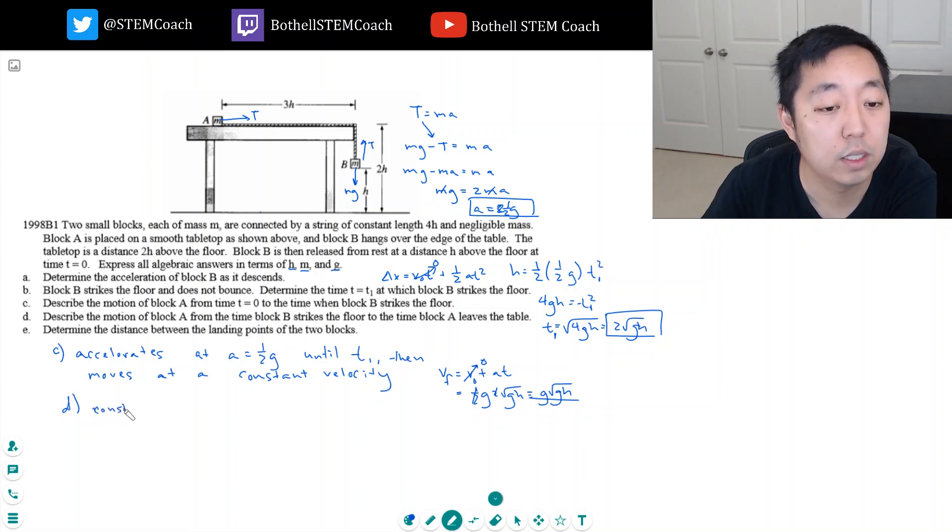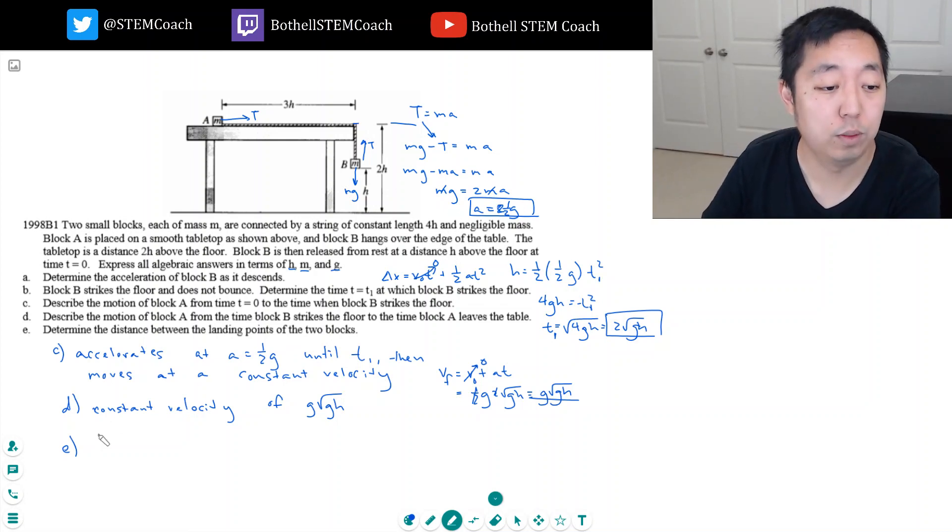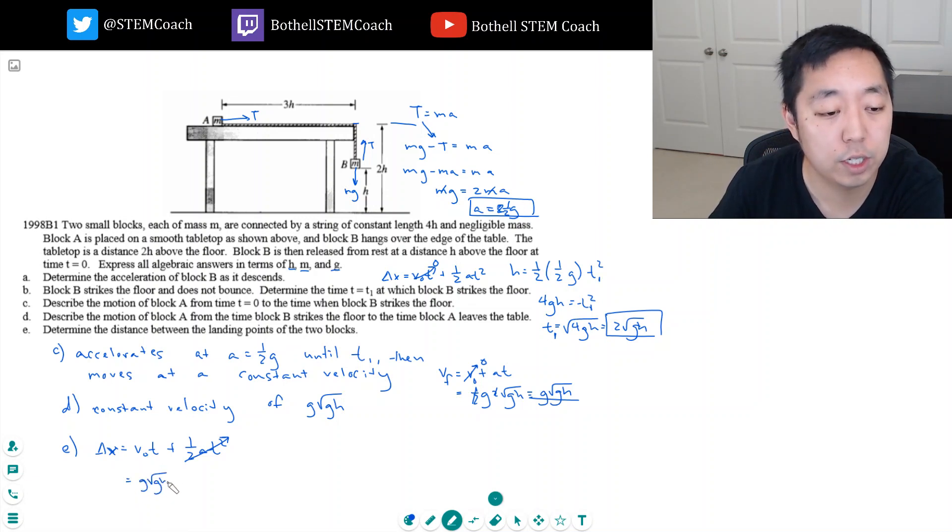Part E: determine the distance between the landing points of the two blocks. This guy is going to fly off the table until he hits the ground. How far does he travel? His delta x would be V times T. Let's write the full equation: V naught T plus one half AT squared in the horizontal direction. But he has no acceleration in the horizontal direction because there's no force acting on it.